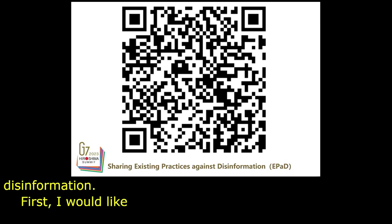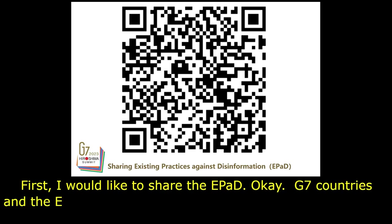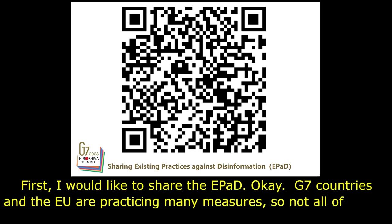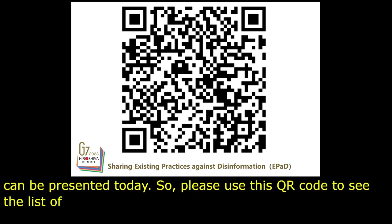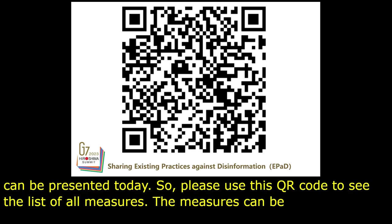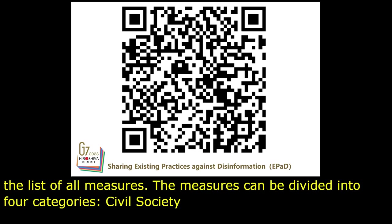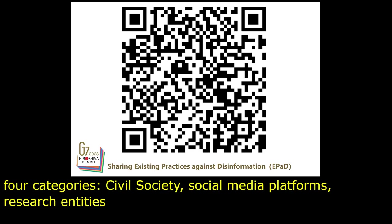G7 countries and the EU are practicing many measures, so not all of them can be presented today. Please use this QR code to see the list of all measures. The measures can be divided into four categories: civil society, social media platforms, research entities, and government. Today, I will introduce only those unique measures.